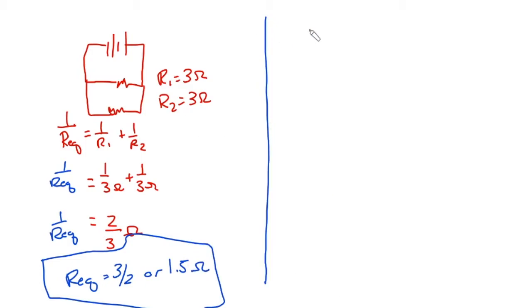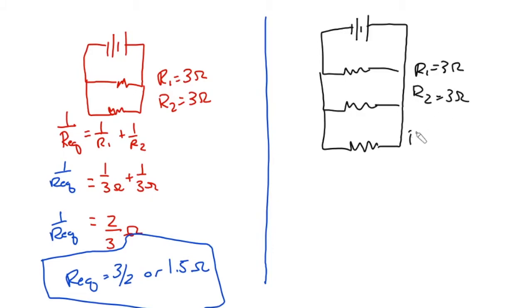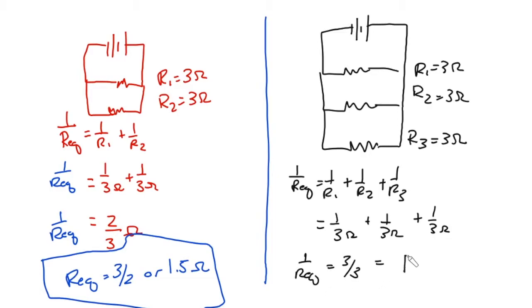Now look what happens if I have the same exact circuit, but now we say that R1 equals 3 ohms, R2 equals 3 ohms, now I add a resistor. Let's look at how that changes the overall, and we kind of just said what might happen. So I say 1 over 3 ohms plus 1 over 3 ohms plus 1 over 3 ohms. 1 over REQ now equals 3 over 3, which equals 1 ohm. Okay, so what happened? When I added it, it went down.